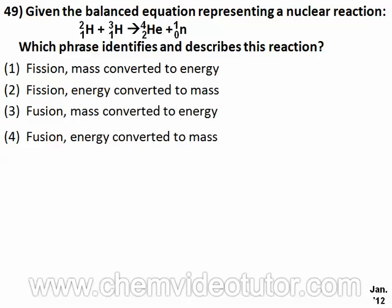Question number 49. Given the balanced equation representing a nuclear reaction, hydrogen-2 plus hydrogen-3 produces helium and a neutron. Which phrase identifies and describes this reaction?